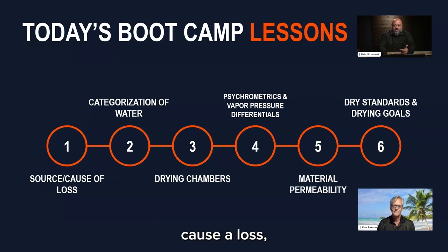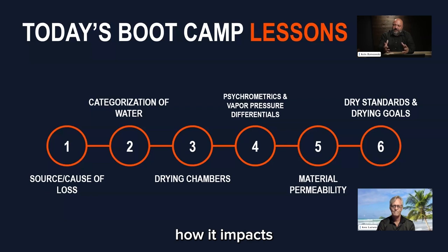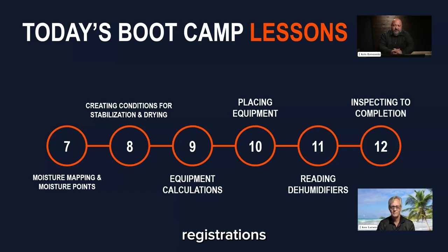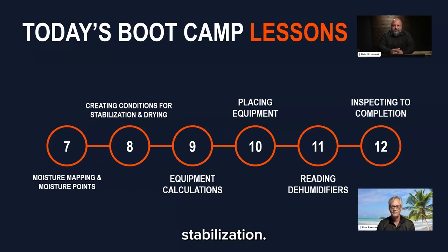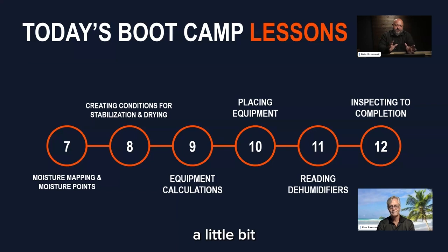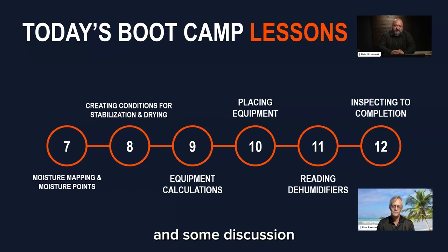We're going to go through source of loss, cause of loss, categorization of water. We'll talk about drying chambers, psychrometrics and vapor pressure differentials, how they impact materials — material permeability — and then drying standards and drying goals. Then we'll get into a moisture mapping discussion. I saw a bunch of questions in the registrations about that, and creating conditions for stabilization and drying — there were a lot of questions about stabilization coming in on registration. Equipment calculations, placing equipment, reading dehumidifiers, inspecting to completing, and some of the constant battles that happen in the review process, with rebuttals and discussion points coming from the standard.